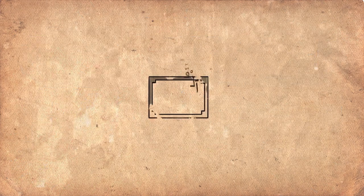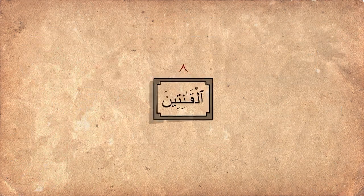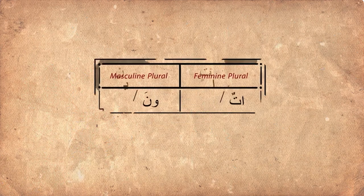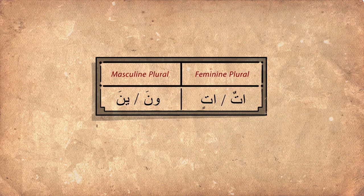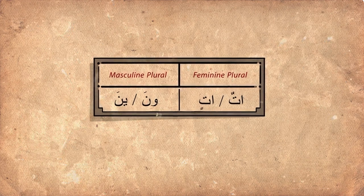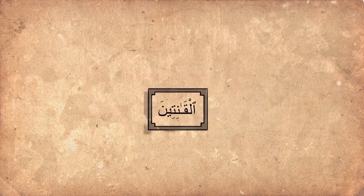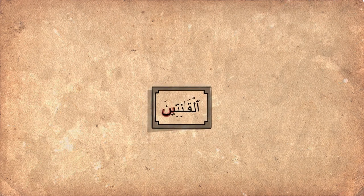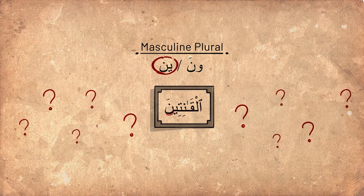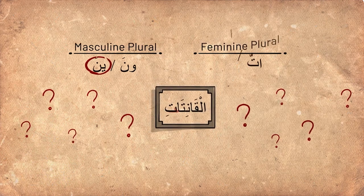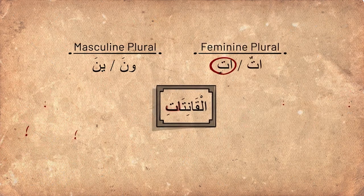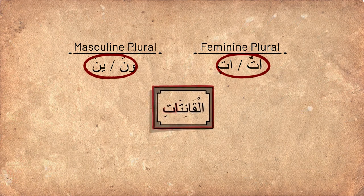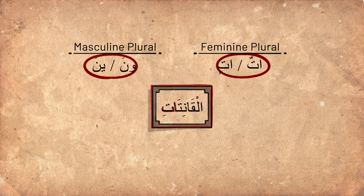Let's focus on just the last word: al-qanitina. This is a plural word. In Arabic, masculine plural words can end in 'una' or 'ina', and feminine plural words can end in 'atun' or 'atin'. Looking at the example again, Allah said that Mary was one of the qanitina, which has a male ending. We would have expected Allah to say 'qanitat'. In this way, Allah is telling us that her example is for both males and females, not just females.